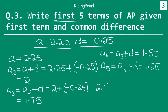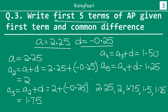So we started off with 2.25 as the first term. The next term was 2. The next term after that was 1.75. Then the fourth term was 1.5 and the fifth term is 1.25. These will be the first 5 terms of that arithmetic progression, where the first term is 2.25 and the common difference is minus 0.25.